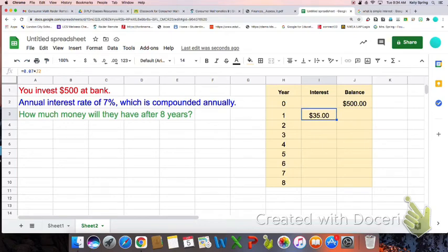Now I'm going to calculate my new balance, which is going to be the $500 plus the $35, which I know is $535. But again, I'm going to use a formula so I can copy and paste that formula in the following rows.